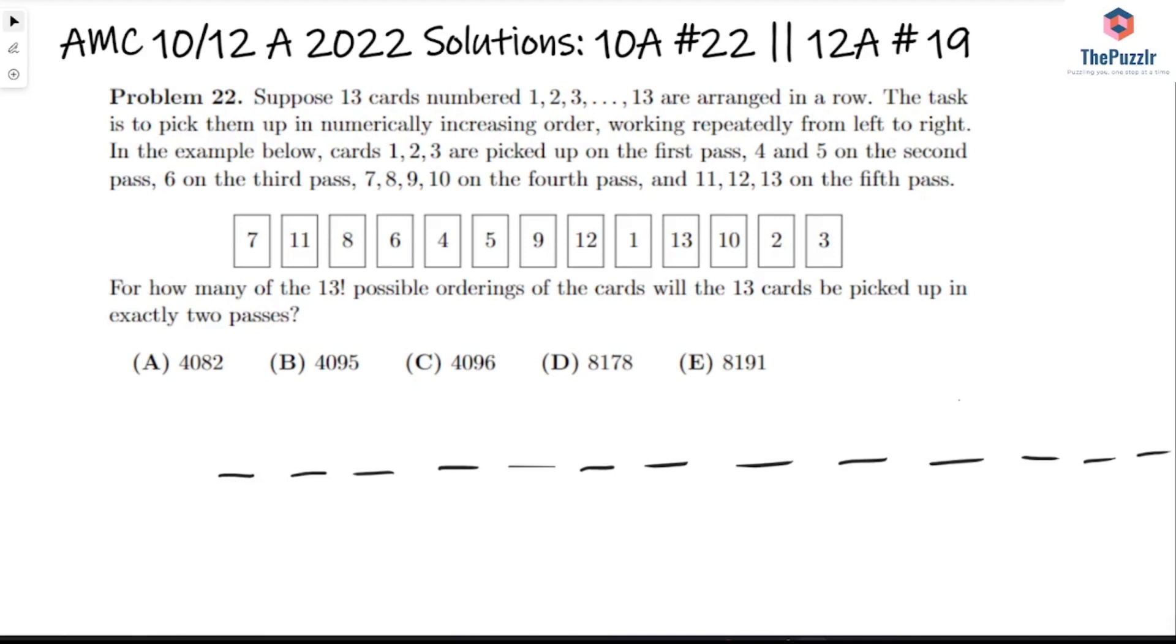For how many of the 13 factorial possible orderings of the cards would the 13 cards be picked up in exactly two passes? So we need to make sure it's exactly and not under or over.